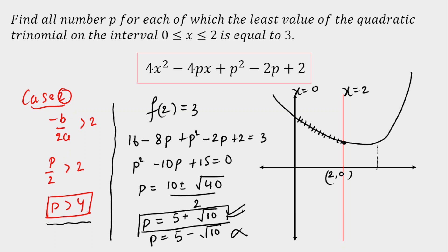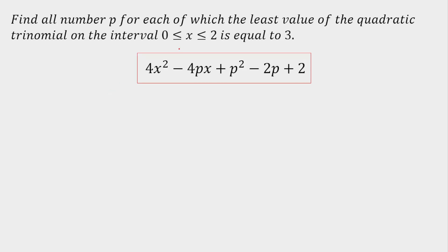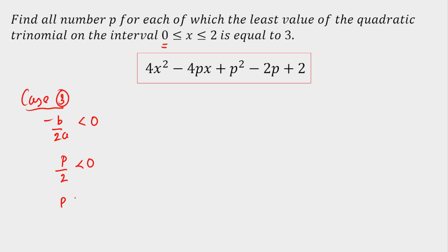Now let's move to Case 3. The vertex is lying on the left-hand side of 0, since we've already considered the right-hand side. That means -B/2A < 0, which gives P/2 < 0, so P should be less than 0. This is the condition for the vertex to be on the left-hand side of 0.